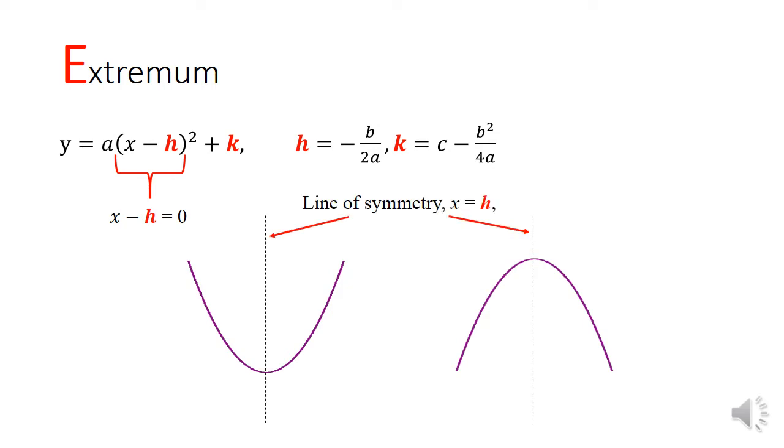When the leading coefficient a is positive, h comma k would be the minimum point, and when a is negative, h comma k would become the maximum point.